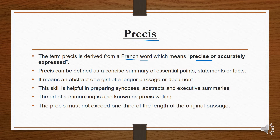Accurately expressed means which is completely defined. Précis is a French language word. Précis can be defined as concise — concise means that it's small or short, but it has all the important points. It's a concise form, a concise summary.